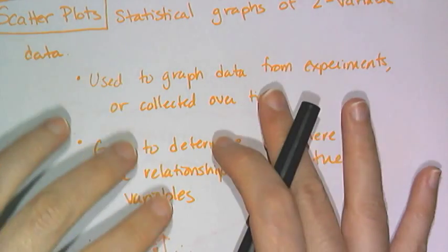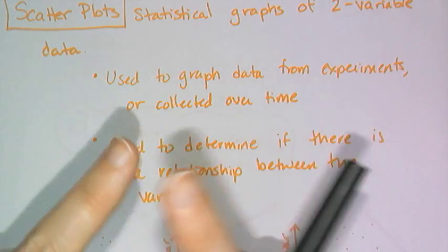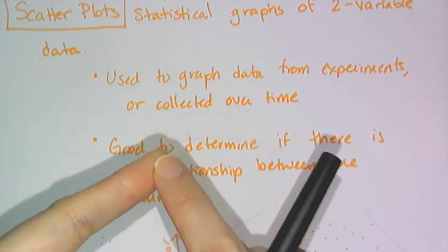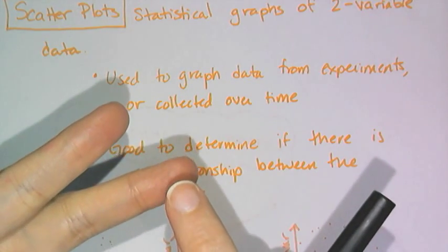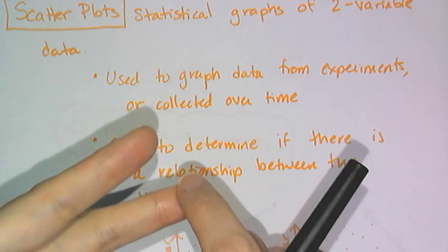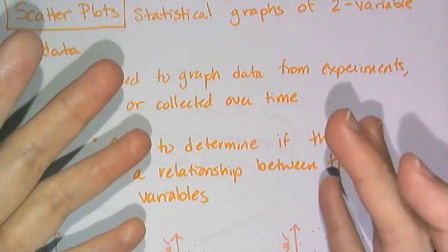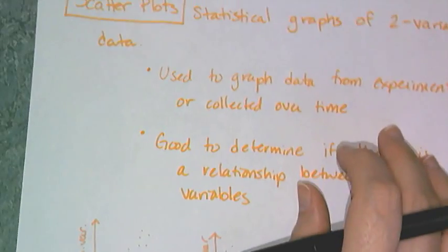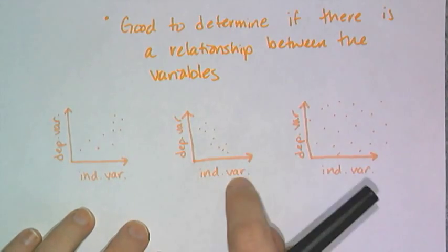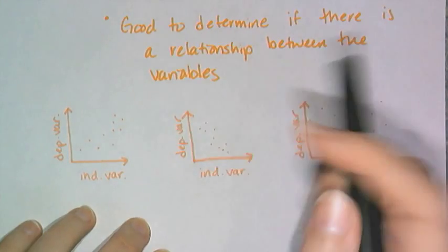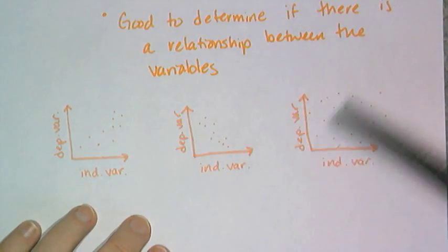Now the most basic level of interpretation of a scatter plot is first you determine if there is a relationship, and then later on when we study equations in depth, you're gonna learn how to write an equation for a relationship if it exists, and then use it to make predictions. But first let's go with the basics. Let's determine if these little graphs of scatter plots, they're sketches now, they're not actually high quality graphs of scatter plots, have a relationship between the variables.